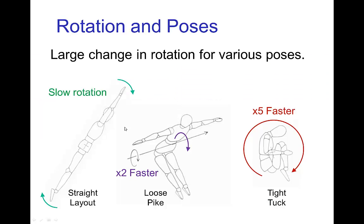So for example, in a somersault, if it starts out with a fairly slow rotation in a straight layout, then bringing the body into a loose pike will actually increase the rotation rate by about a factor of two. And going into a tight tuck is about five times faster than the original slow rotation.